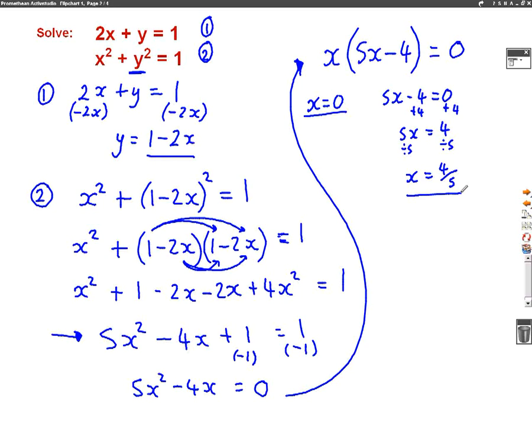So the way we're going to find our y answers that go with the x answers is by substituting the x values into this first equation. So when I substitute x equals 0 into that first equation, I will get, well 2 times 0 is 0, so I will get y equals 1. So one of the answers is when y equals 1 and x equals 0.